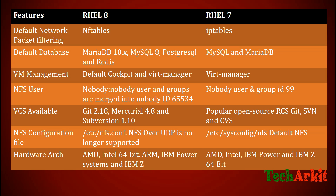The version control systems available in RHEL 8 include Git 2.18, Mercurial 4.8, and Subversion. In RHEL 7 the popular open-source version control systems were Git, SVN, and CVS.